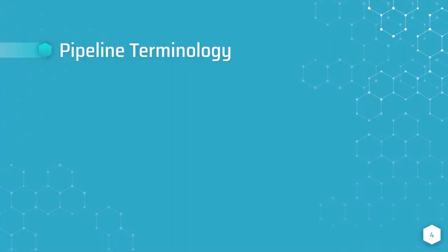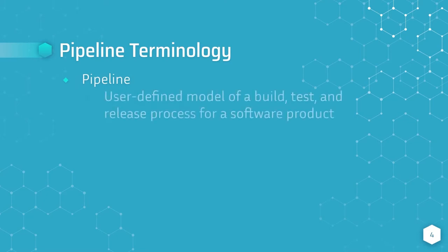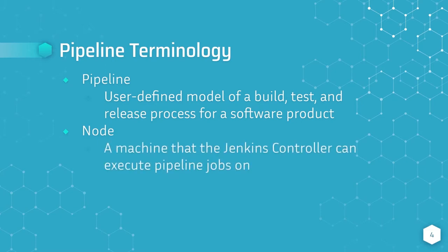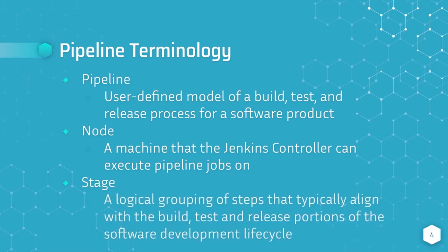Let's quickly discuss some key pipeline terminology. The first is the concept of a pipeline — a user-defined model of a build, test, and release process for a software product. The second term is node: a Jenkins node is a machine that the Jenkins controller can execute pipeline jobs on. The next concept is a stage: a Jenkins pipeline stage is a logical grouping of steps that typically align with the build, test, and release portions of the software development lifecycle.